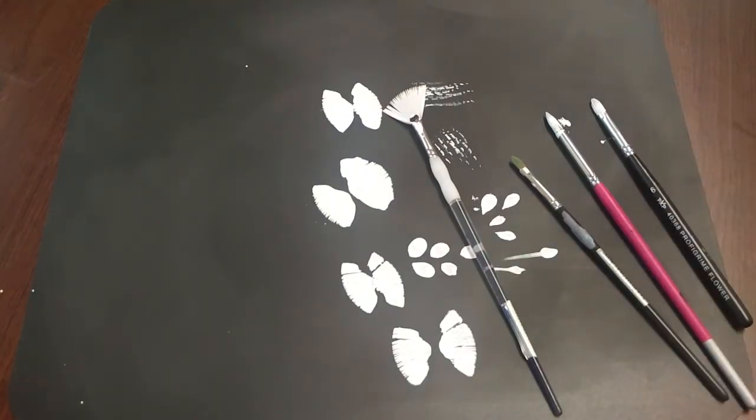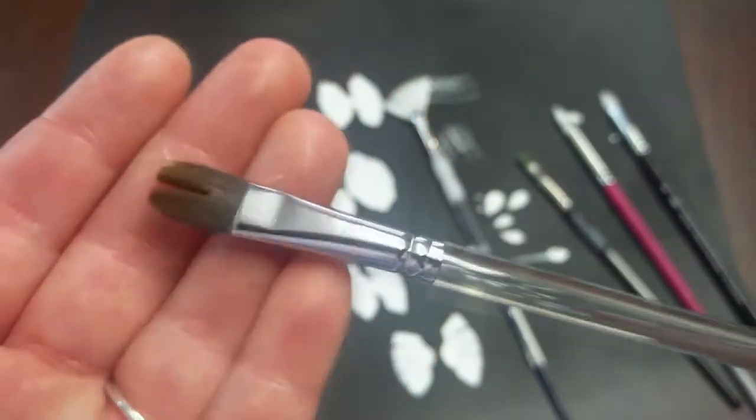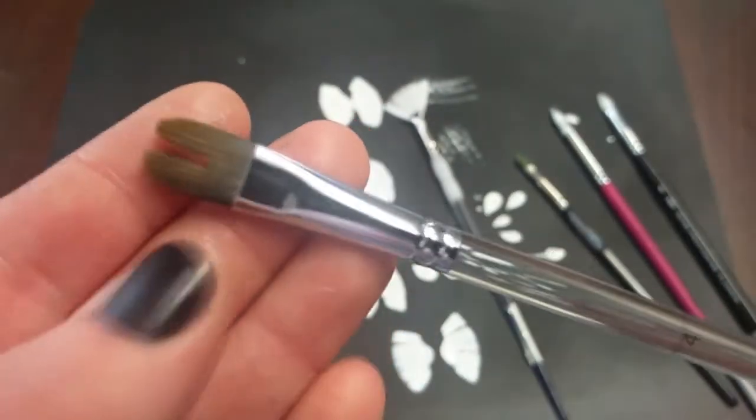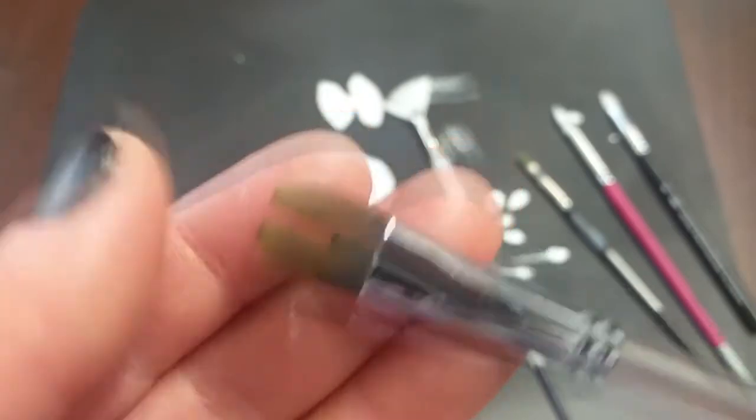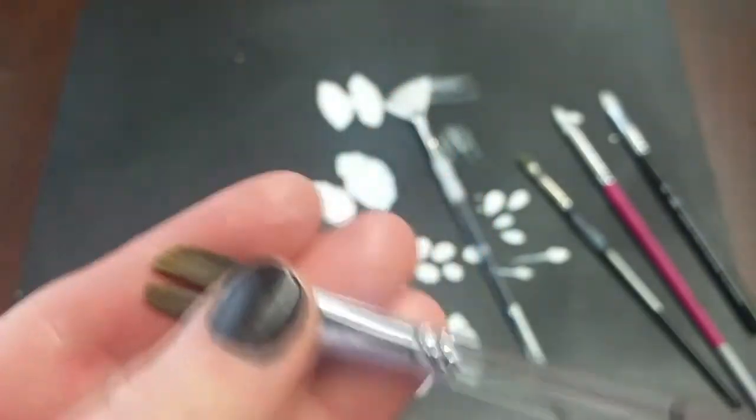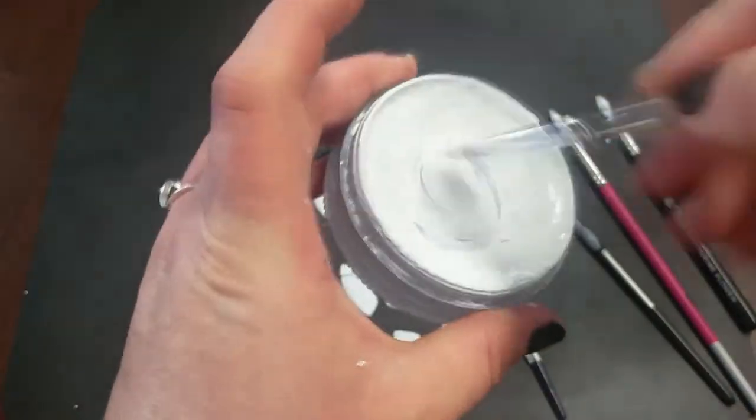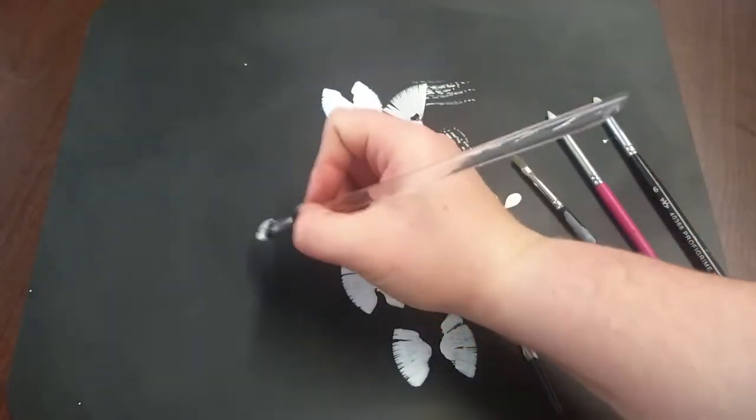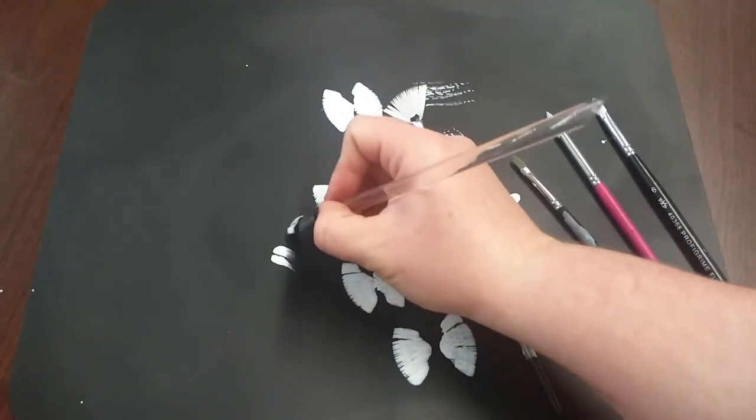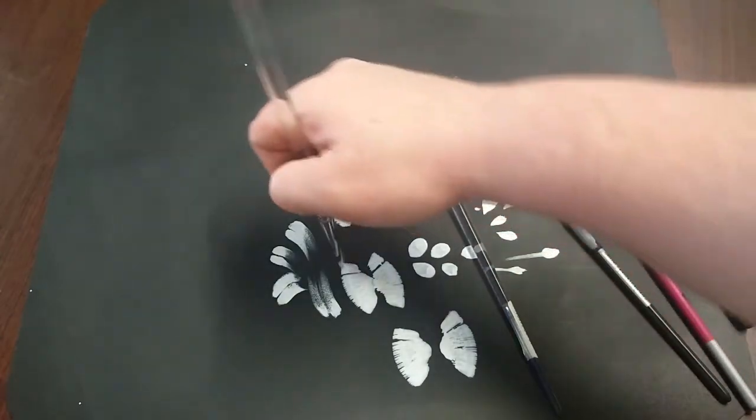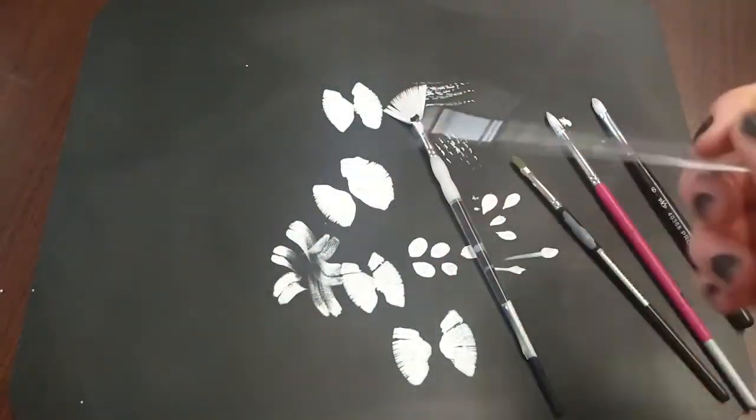The next brush I'm going to show you is a double filbert. This is one I actually cut myself because I needed a double filbert and I didn't have one to hand. As you can imagine, it's a filbert that's been cut down the middle and then rounded, so what it does is creates two smaller filberts. I use this a lot for doing daisies or for double teardrops. When you put it down on the paper and drag, what you'll get is a double effect, and if you went round in a circle doing that, you could very easily create a very pretty daisy-like flower.